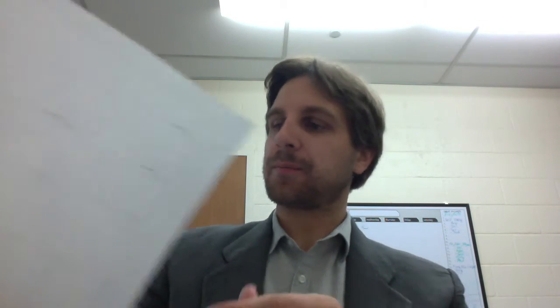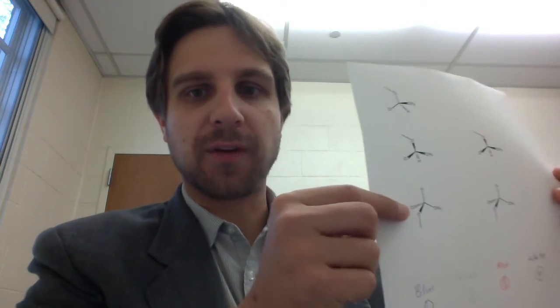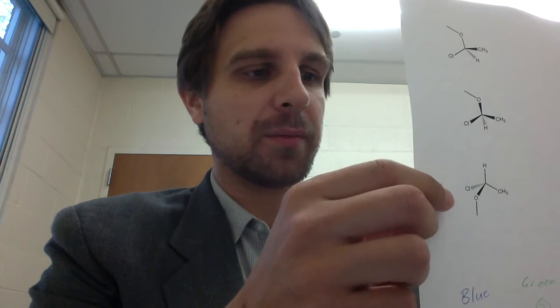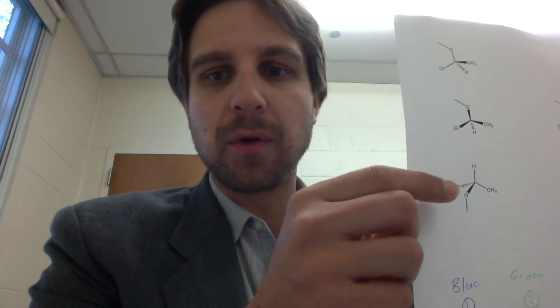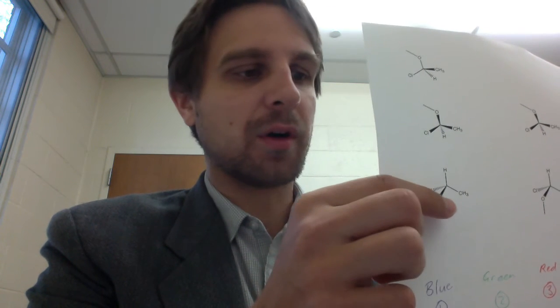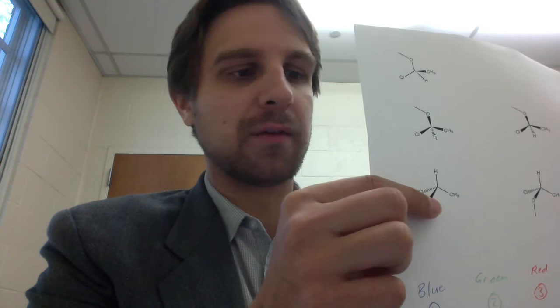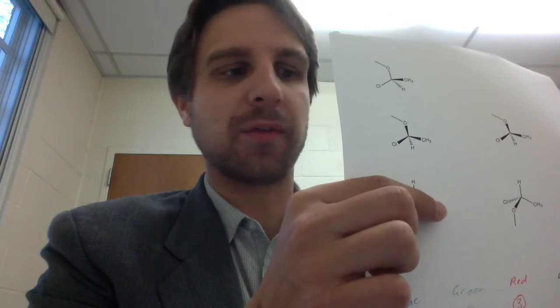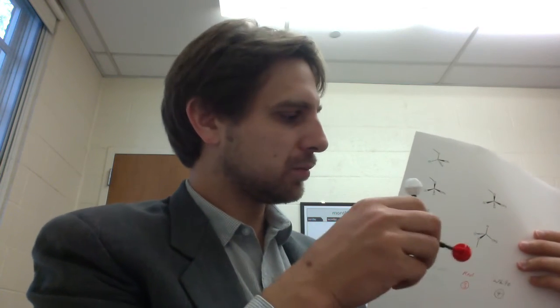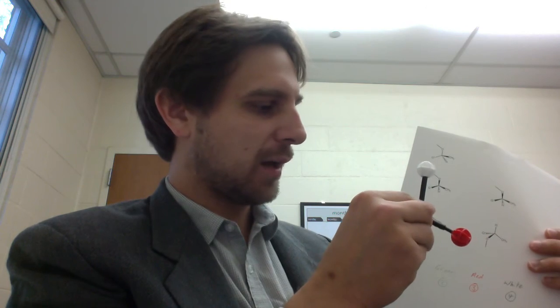So, for instance, let's say we want to define the stereochemistry of this molecule here. Hydrogen is the lowest priority group. Chlorine is the highest priority group. Oxygen is the second highest priority group. And the methyl group is the third highest priority group. So, what we need to do is we can either build our model and line it up. We would see that, for instance...